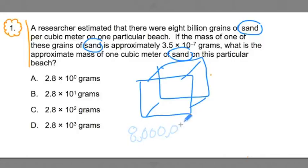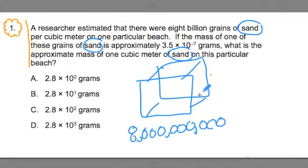Now a cubic meter — maybe you're not that familiar with it — it's over 3 feet by 3 feet by 3 feet. It's a really big box if you want to think about it. It's like the size of those boxes you get when you're moving. So we're talking about a really big box that can be filled up with 8 billion grains of sand. That's what that first sentence says.